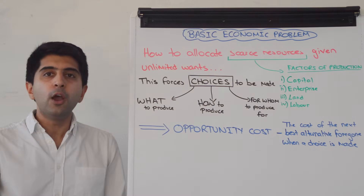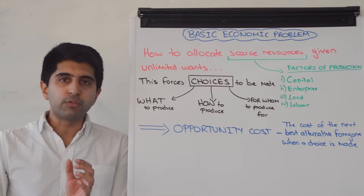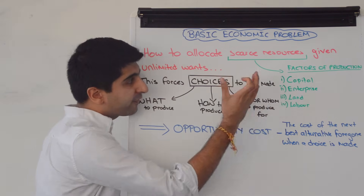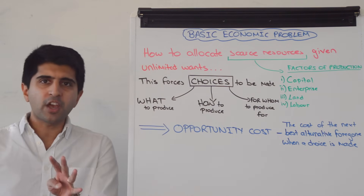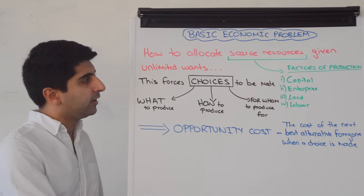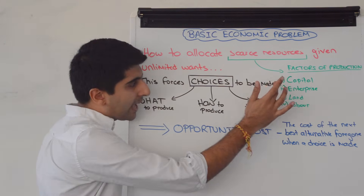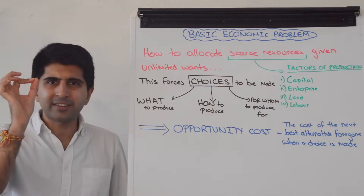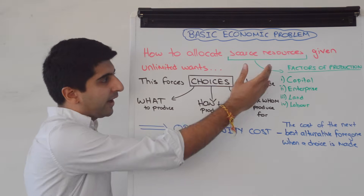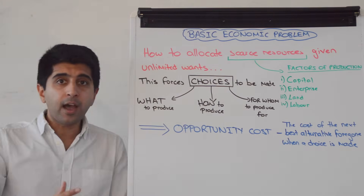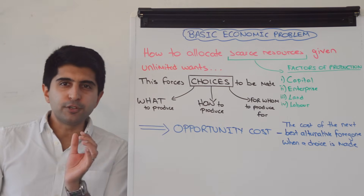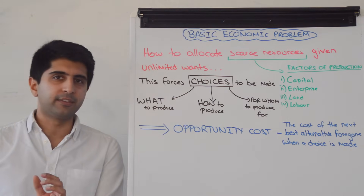Resources are scarce. What do we mean by resources in economics? Well, another name for resources are factors of production, and there are four types: capital, enterprise, land and labour. Just think CELL — C-E-double-L — and we get to these factors of production. Basically, these are resources that when combined together can produce goods and services.